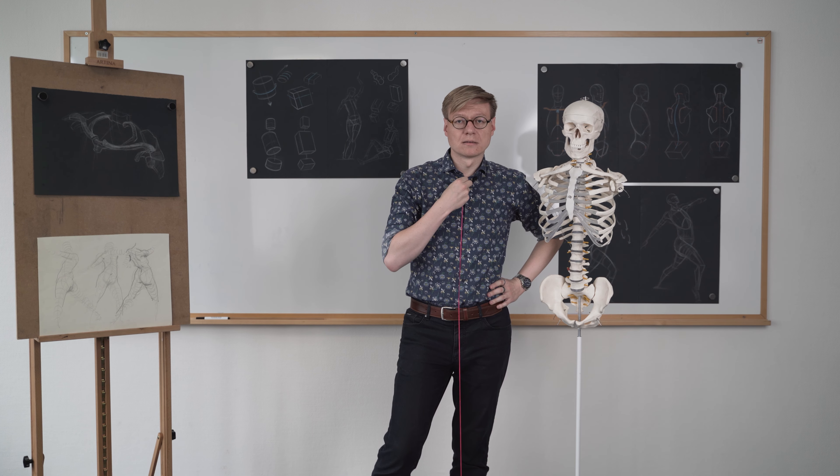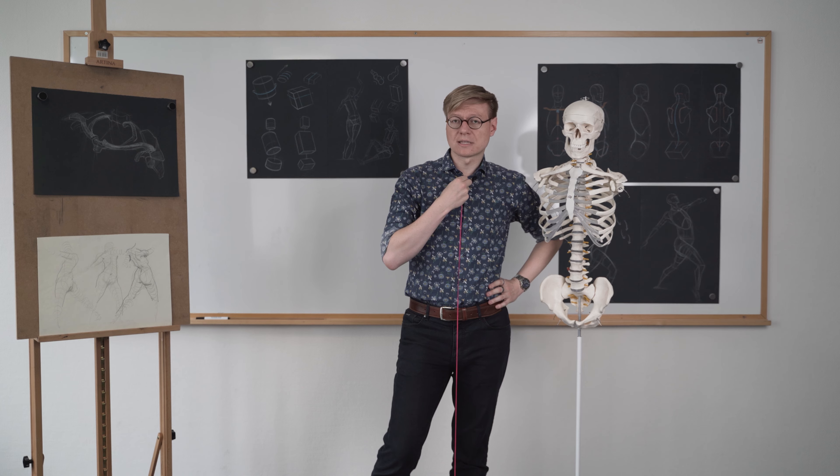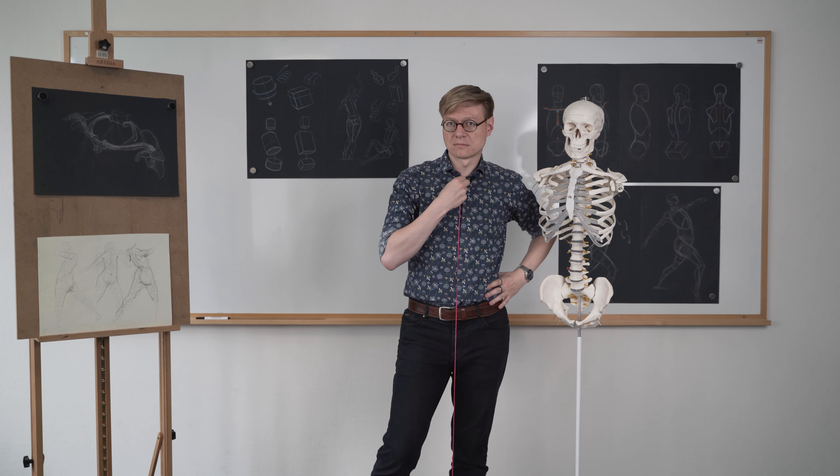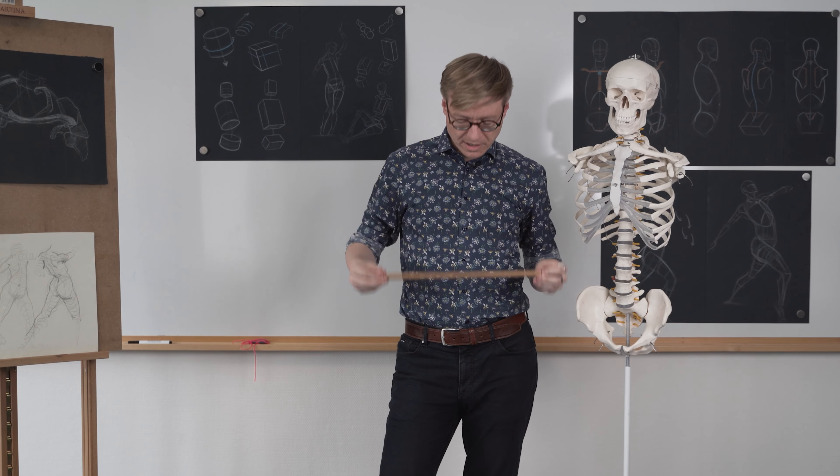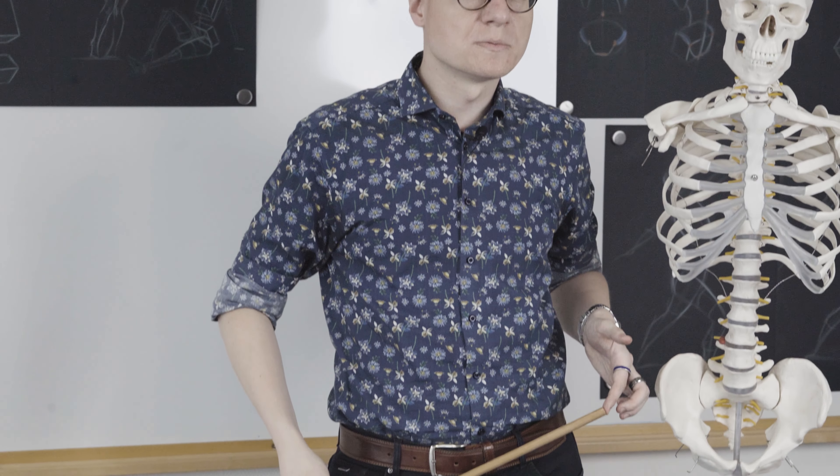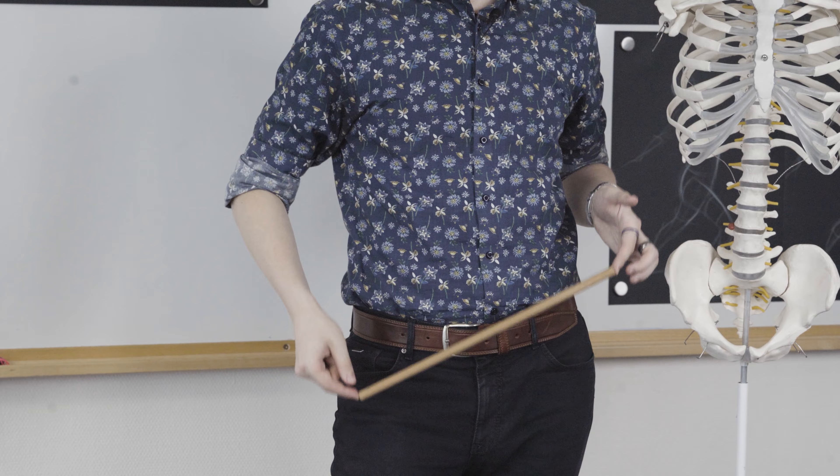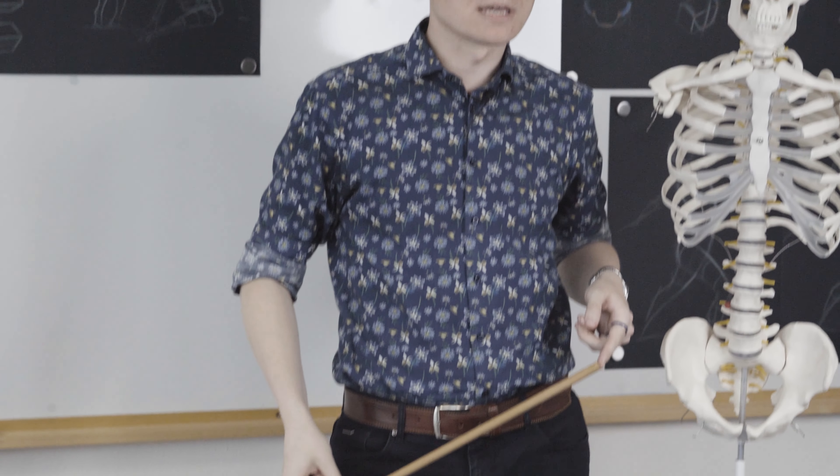We call this position a contrapposto. This is because my rib cage and pelvis are now in counter position to each other. We can observe this if we're looking at the angles as I had just described. As I go into the contrapposto, notice how my rib cage is now tilting towards the left, whereas my pelvis is tilting towards the right. These two movements are countering each other. Thus, we have a contrapposto, a counter position.